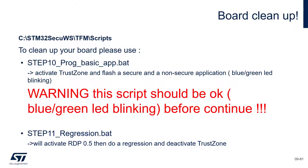It will also set all the option bytes to their default values. With the Step 11 regression script, we will activate RDP 0.5, then perform a regression from RDP 0.5 back to RDP level 0, removing TrustZone. With both scripts, you are sure to have the default values in your option bytes, even when TrustZone is enabled.